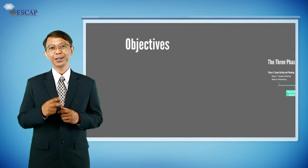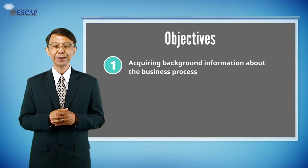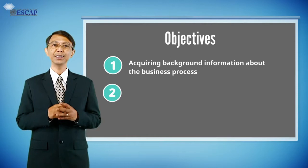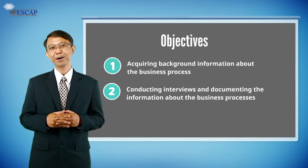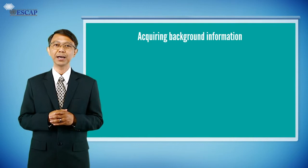There are two steps within this phase. Firstly, acquiring background information about the business process under investigation. And secondly, conducting interviews and documenting the captured information about the existing business processes. Let us start by discussing the first step of acquiring background information about the business process under investigation.